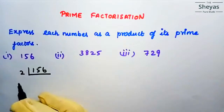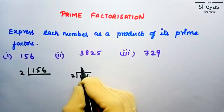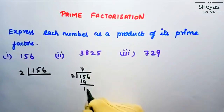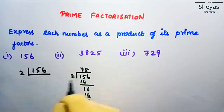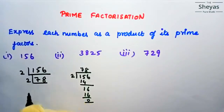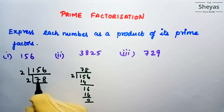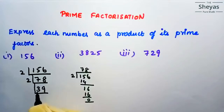Dividing 156 by 2 gives 78. Dividing 78 by 2 gives 39. Now see — 39 is not an even number, so it is not divisible by 2. So let us take the next prime number 3.